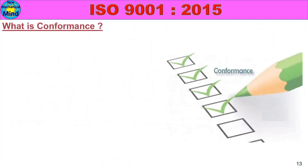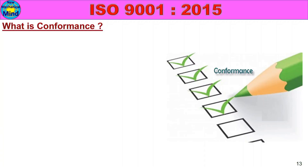What is conformance? Conformance is defined in ISO 9000:2015 clause 3.6.4. It refers to the fulfillment of established mandatory or implicit needs and expectations within a quality management system.